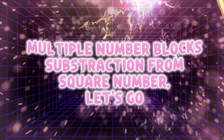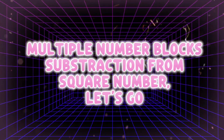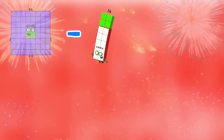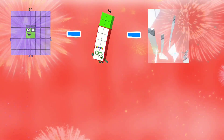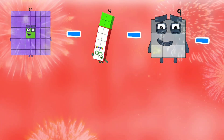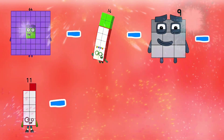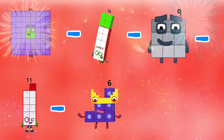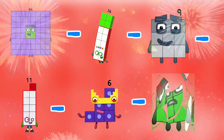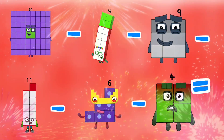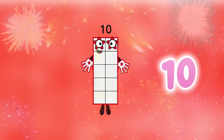Multiple number block subtraction from square number. 64 minus 14 minus 9 minus 11 minus 6 minus 4 is equals to 10.